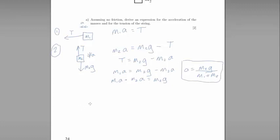We also need to find an expression for T. We know that T equals M1A, so let's substitute A into that, and it will give us T equals M1 multiplied by M2G divided by M1 plus M2.